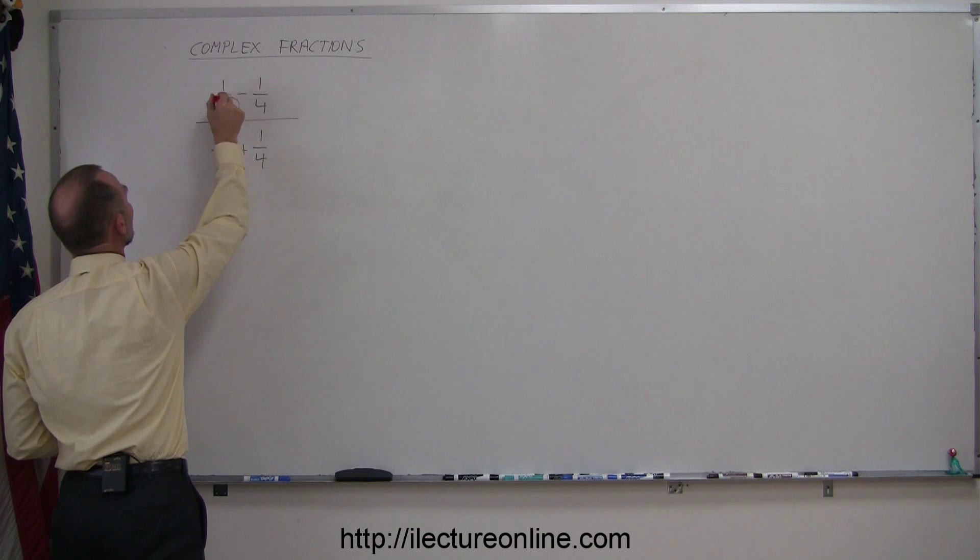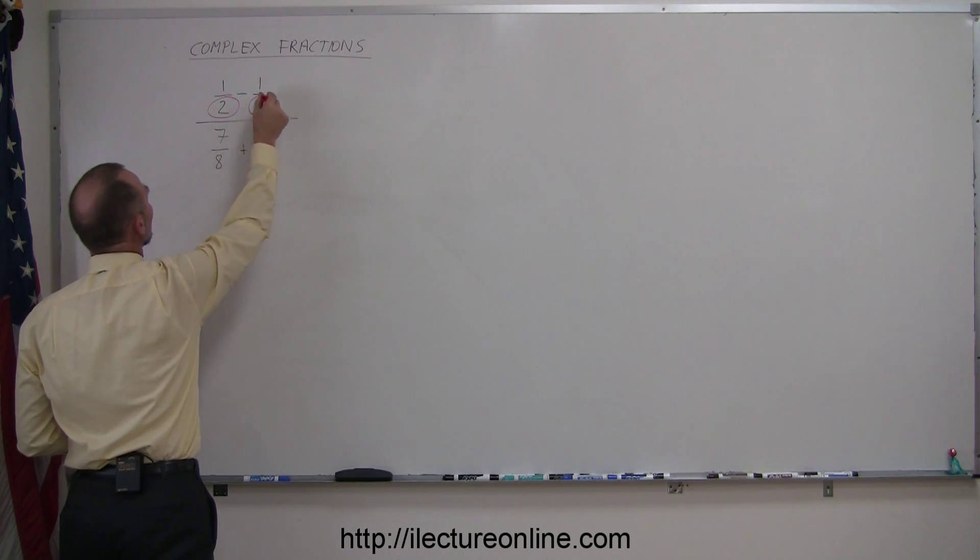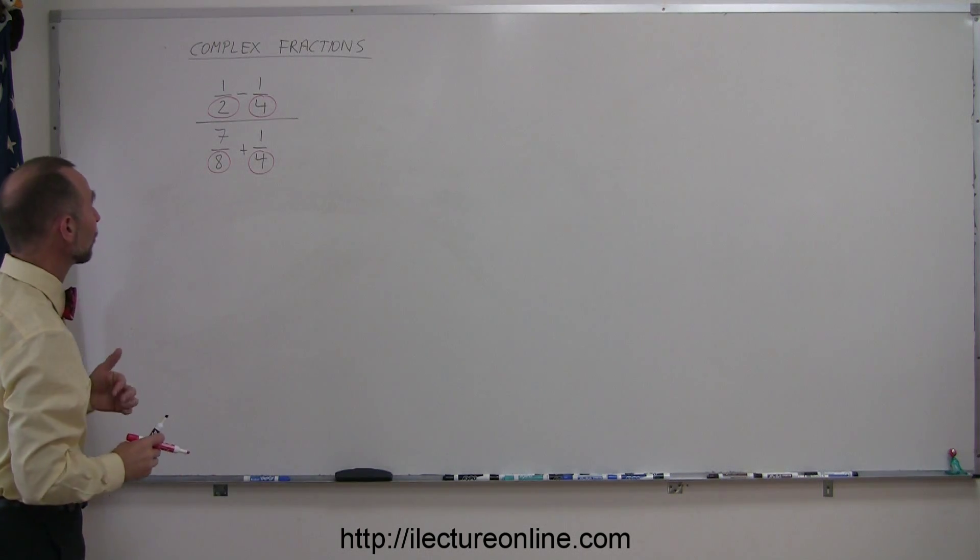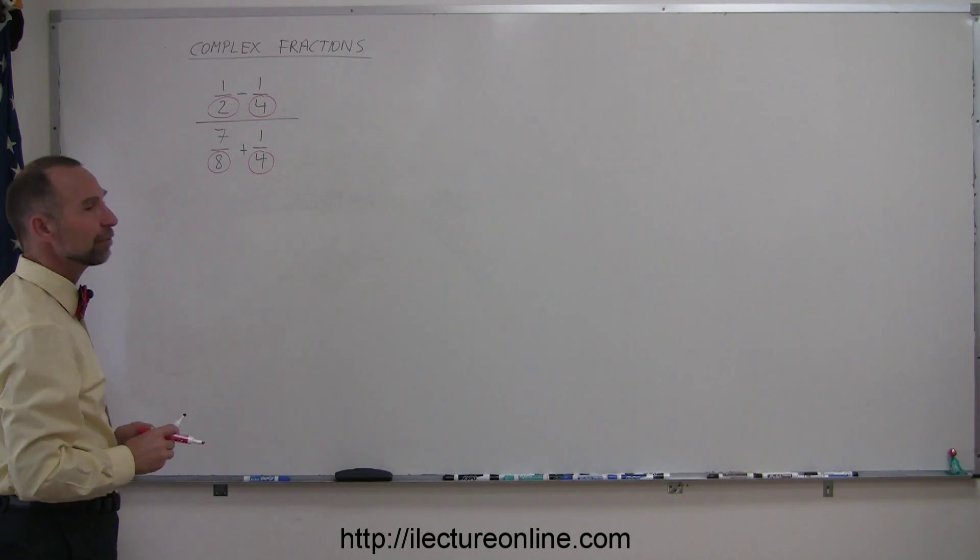So we have a 2 in this denominator, we have a 4 in this denominator, we have an 8 over here and we have a 4 over there. Notice there's four fractions within that complex fraction and each of those has a denominator, and those are the numbers 2, 4, 8 and 4.